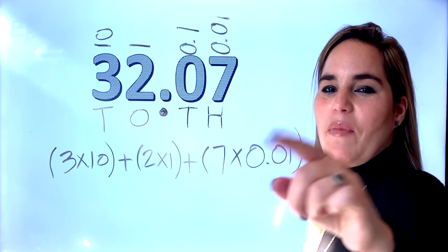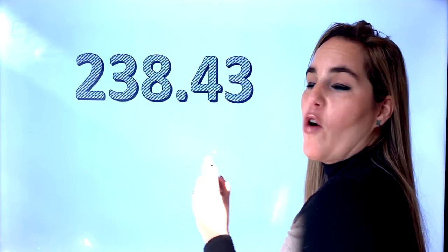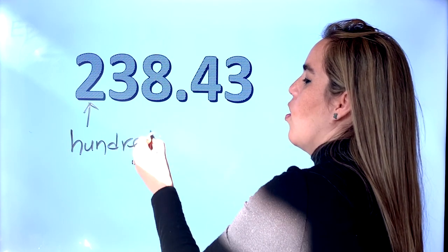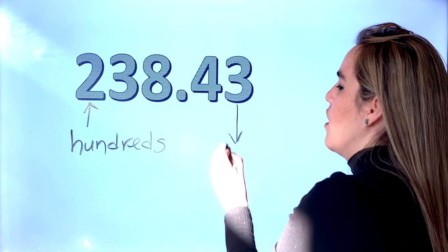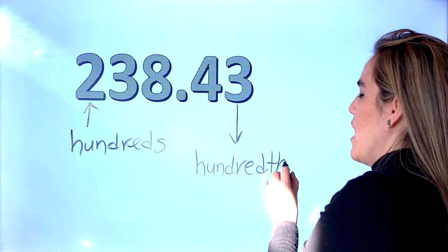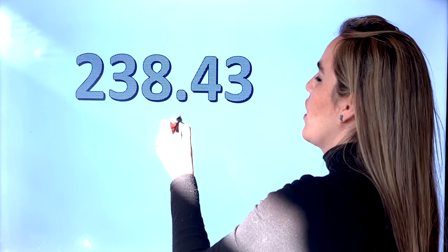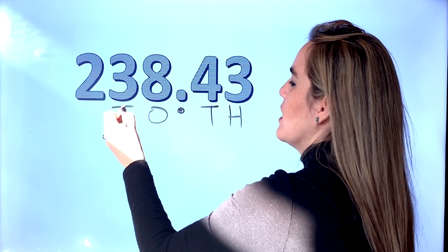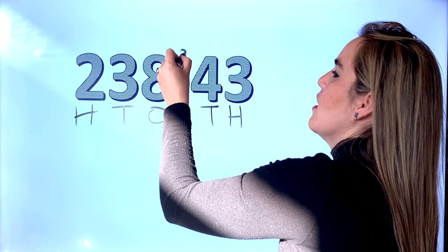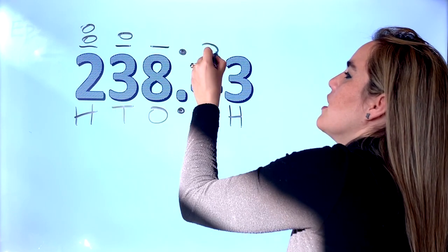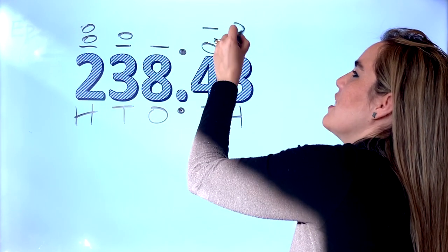Now let's do the last exercise before the math challenge. Before we move on — these are hundreds as a whole number, and these are hundredths with T-H. What do we do first? Our place value chart. We have decimal T-H, ones, tens, hundreds. One, ten, hundred, zero-point-one, zero-point-zero-one.